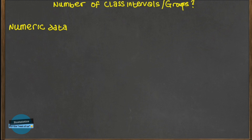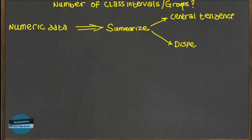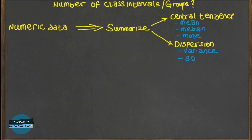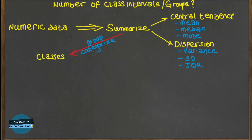Anytime you collect numerical data during research, we can summarize it using measures of central tendency and their corresponding measures of dispersion. For central tendency we use the mean, median, and mode, while for dispersion we use variance, standard deviation, and interquartile range. However, this is not enough to represent all numeric data. You can further summarize and get insights by grouping the data into categories called classes, then report the grouped frequency and percentages.